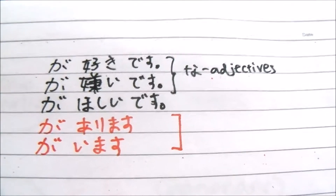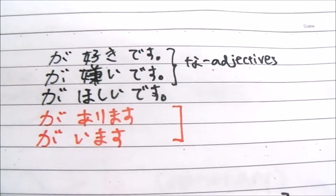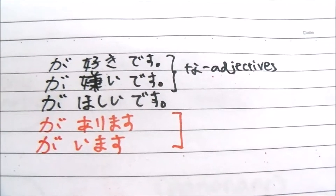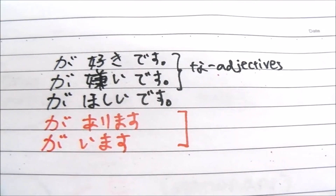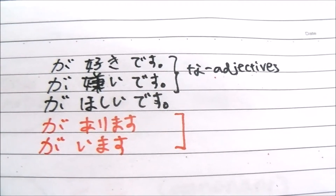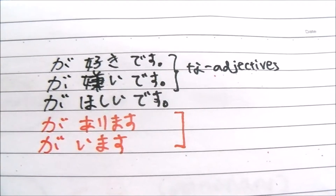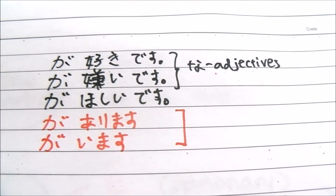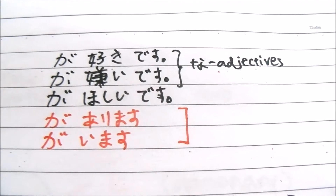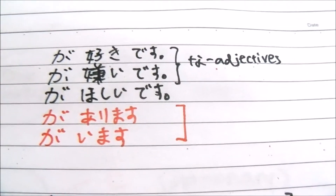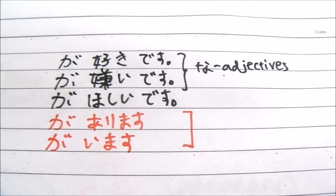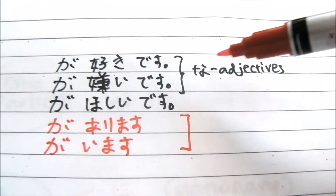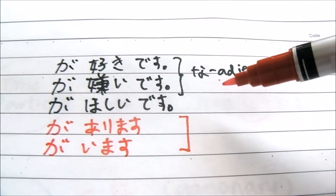Let's take a look at the が (ga) particle. You have learned that it's fixed for things like が好きです (ga suki desu), が嫌いです (ga kirai desu), and が欲しいです (ga hoshi desu) in the earlier lessons. Now you've also learned there's がいます (ga imasu) and があります (ga arimasu). The first two — like and dislike — are both な (na) adjectives, by the way.